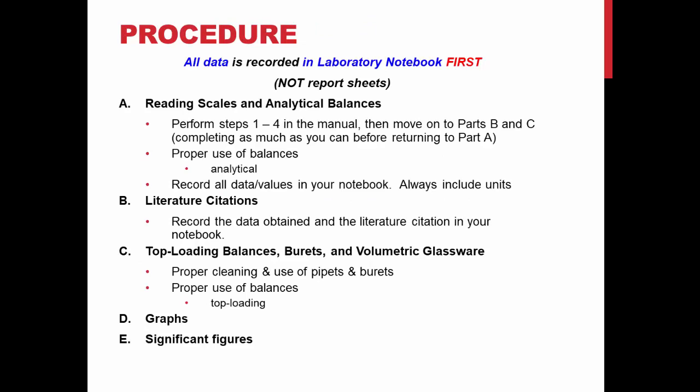Procedure: Your data will be recorded in your laboratory notebook first, not the report sheets. Part A: reading scales and analytical balances — perform steps 1 through 4 in the lab manual, then move on to parts B and C. You should complete as much as you can before returning to part A. Your instructor will demonstrate proper use of balances in the lab. Be sure to record all data values in your notebook and always include units. Part B: literature citations — record all data obtained and the literature citation in your notebook. Part C: top-loading balances, burettes, and volumetric glassware. Before using volumetric glassware, they should be rinsed 3 times with warm water, 3 times with deionized water, and 3 times with the solution being used. To clean volumetric glassware, rinse 3 times with hot water and 3 times with deionized water. In Part D, you will be making a graph using Excel. Refer to your lab manual for how to construct a graph using Excel — there is also a PowerPoint video that will take you through this process. Part E of this lab deals with significant figures.